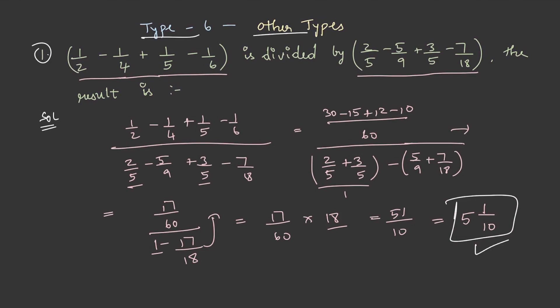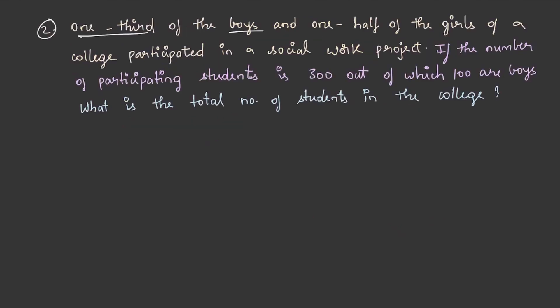Let us solve another question. One third of the boys and one half of the girls of a college participated in a social work project. If the number of participating students is 300, out of which 100 are boys, what is the total number of students in the college?